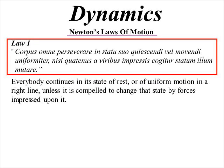So the first law, everybody continues in a state of rest or uniform motion in a right line unless it's compelled to change that state by forces impressed upon it. That's basically saying that we're going to have a constant velocity unless there's some force or acceleration applied to us.